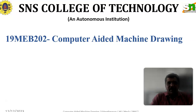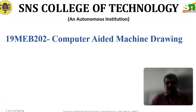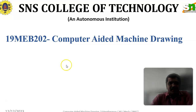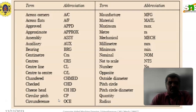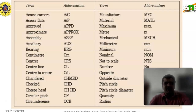Now, the content will continue in this video also. In the previous introduction stage, we discussed what are all the important instruments used in computer-aided machine drawing and what are the important notations we are using. In today's lecture series, we are going to see what are the abbreviations we are using. Particularly in a drawing, there are a lot of abbreviations used in the dimension part and in the drawing part.